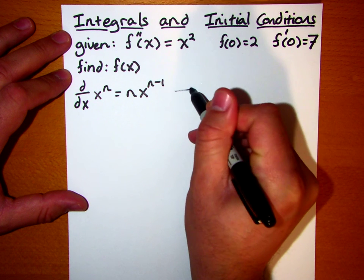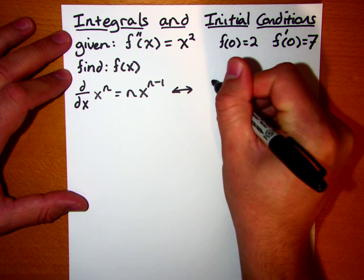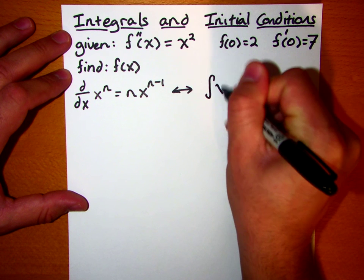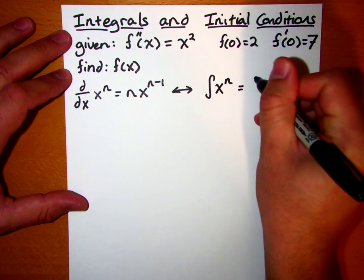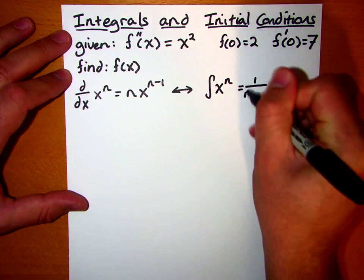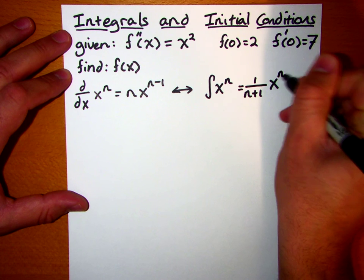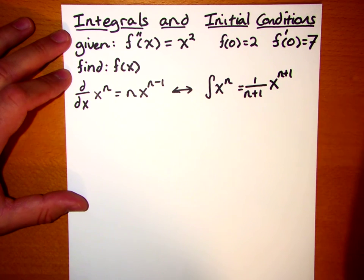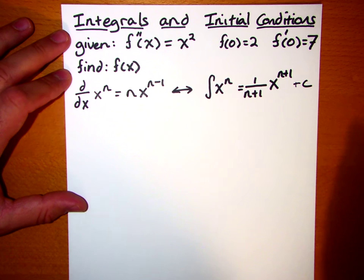Well, conversely, if we take the integral of x to the n, that's going to be equal to 1 over n plus 1 times x to the n plus 1 plus c. You don't want to forget your c there.